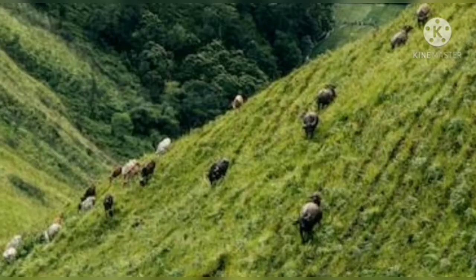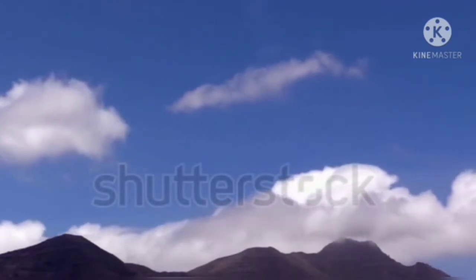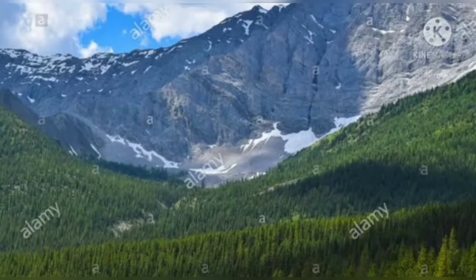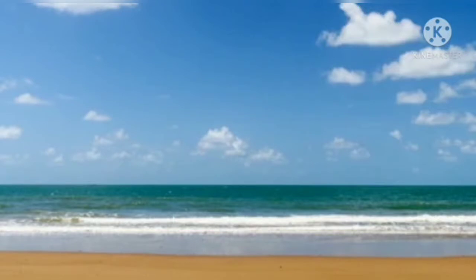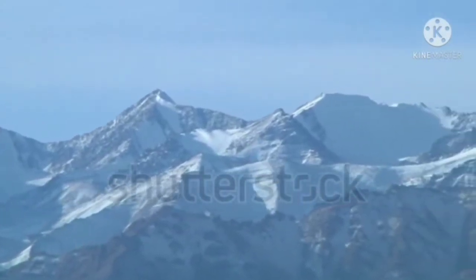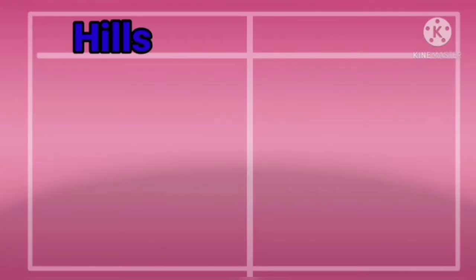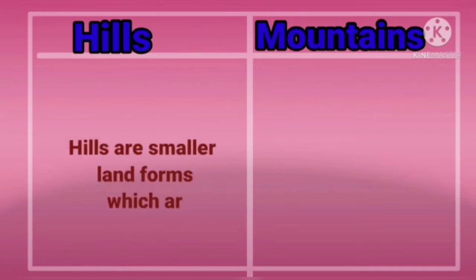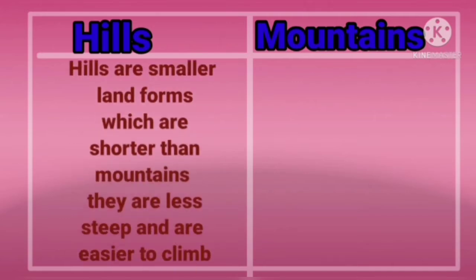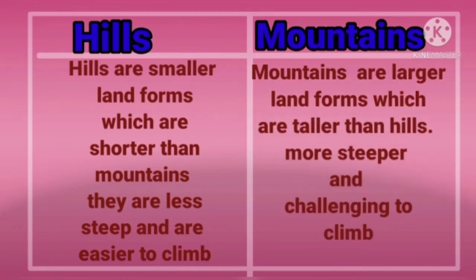The cloud arose higher and higher and reached the mountains. Mountains are very high hills, more than 1000 meters above sea level. At some places they are covered with snow. You would have seen the snow-covered Himalayan mountain range — are they not beautiful? Hills are smaller landforms which are shorter than mountains, less steep and easier to climb. Mountains are larger landforms which are taller than hills.